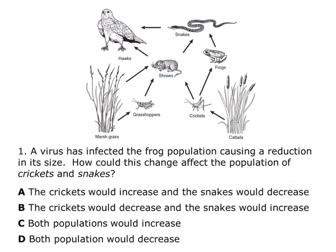Question 1: A virus has infected the frog population, causing a reduction in its size. How could this change affect the population of crickets and snakes? The frog population is decreasing. In front does the same, so the snake population would also decrease because they have less food. But behind does the opposite, so the cricket population would increase — fewer frogs eating those crickets means more crickets can survive. The correct answer is A.